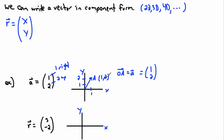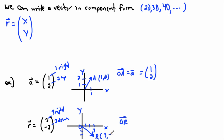You might think, why bother writing it this way if I already know the coordinates? It's not always so clear — that's why it becomes important to define these carefully. For example, vector (3, −2) means three to the right and two down. So I finish at point R with coordinates (3, −2), and the vector OR joining the origin to that point is written as r = (3, −2). This is 2D component form.